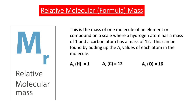Now we've discussed what we mean by the relative atomic mass, it's time to turn our attention to the relative molecular mass, or formula mass. The relative molecular mass or formula mass is given the symbol MR, and this is the mass of one molecule of an element or compound on a scale where a hydrogen atom has a mass of 1 and a carbon atom has a mass of 12. It can be found by adding up the AR values — the relative atomic masses — of each atom in the molecule.